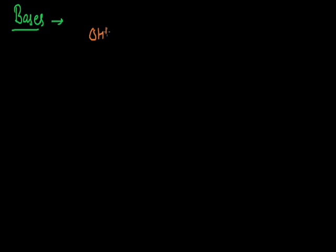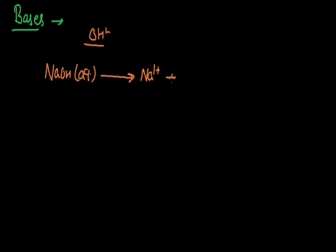Now if I talk about the definition given by Arrhenius, then according to Arrhenius, bases are defined as those substances which give hydroxyl ion, that is OH⁻ ion. If a substance releases this hydroxyl ion in its aqueous solution, that is termed as a base. For example, if I talk about sodium hydroxide NaOH, when it is added in water and we take the aqueous solution — denoted by the symbol AQ — it ionizes to give sodium cation and hydroxyl anion. Since sodium hydroxide in its aqueous solution gives hydroxyl ion, it can be taken as an example of a base.